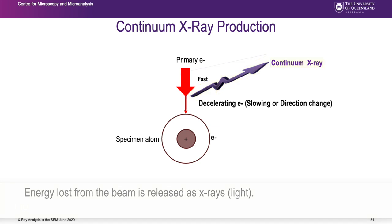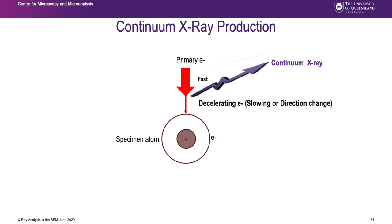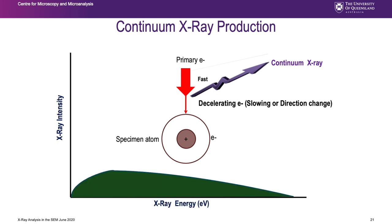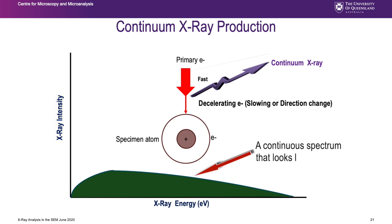The reason it's called continuum is it produces a spectrum: along the x-axis we have the X-ray energy, along the y-axis the intensity - the total number of X-rays. It forms a continuous spectrum that looks like a hump, so any energy in that region is possible.